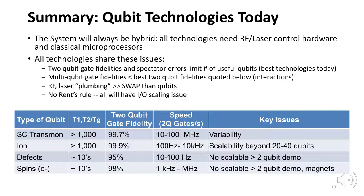I'll now summarize and compare these technologies. Quantum computing systems will always require RF and/or laser hardware and classical microprocessors to control and measure the qubits. The best technologies, like superconducting qubits and ions, are limited by two-qubit gate fidelity and classical and quantum crosstalk. Note that multi-qubit gate fidelities are less than the best two-qubit gate fidelities listed in this table, and RF and laser equipment's size, weight, and power is far greater than that of the qubits. Finally, all technologies suffer from signal escape issues because there is no equivalent to Rent's rule — every qubit needs to be touched by a signal. The second column of the table gives the ratio of coherence time to gate time, which is an approximate measure of how many gates can be executed before the quantum state is lost.